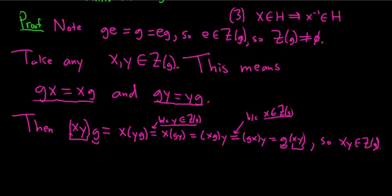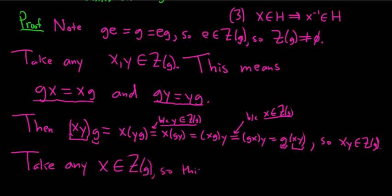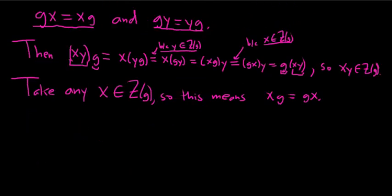Now we just have to show it's closed under inverses. Take any x in the centralizer of little g. This means xg equals gx. Now we have to show the inverse is there — we have to look at x⁻¹·g. This is going to be a little bit trickier.